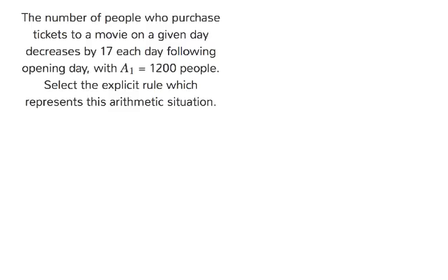The number of people who purchase tickets to a movie on a given day decreases by 17 each day following opening day, with A₁, or the starting value, equal to 1200 people. That's the number of people who went to the movie on the first day.